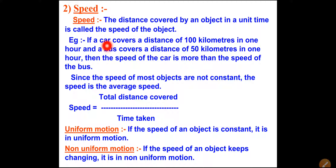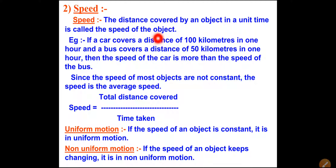Now the next point is speed. The distance covered by an object in unit time is called the speed of the object. In the previous example, the car was moving along the straight road and covered some distance over time. For example, if in five minutes the car covered five kilometers, that is the speed. Suppose a car covers 100 kilometers in one hour and a bus covers 50 kilometers in one hour, then the speed of the car is more than the speed of the bus.